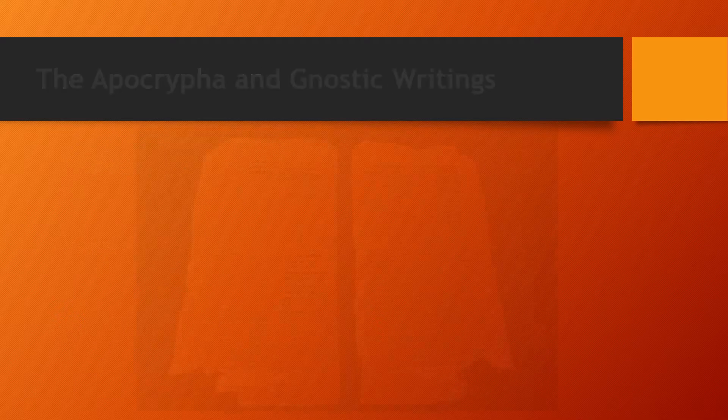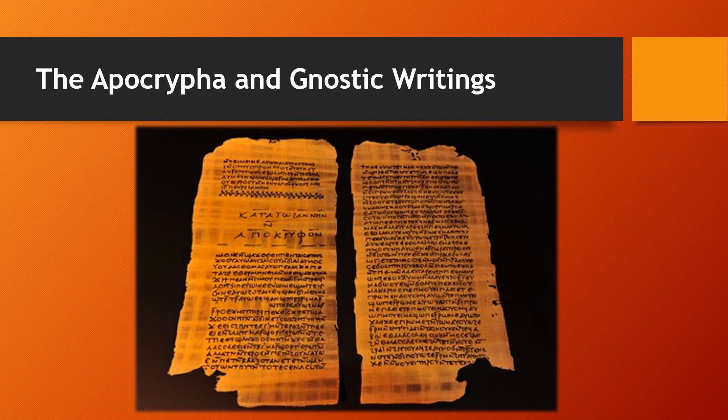In the first few hundred years of the church, many writings emerged giving an account of Christ and his teachings. Not all though gave an authentic depiction of his actions, character, or what he taught. For example, the Gospel of Thomas, the Apocryphon of James, or the Dialogue of the Saviour. These were not included in the Bible, or what we call the Canon of Scripture.